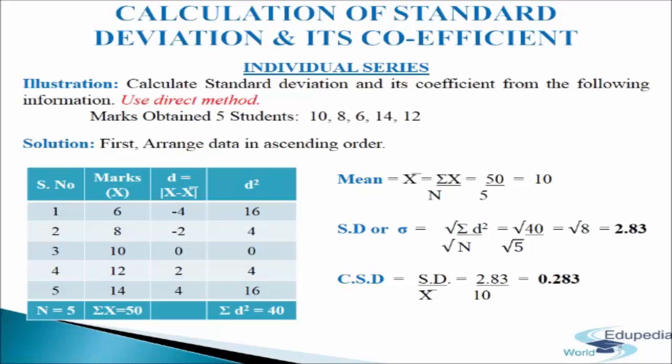Standard deviation = √(σd² / n) = √(40 / 5) = √8 = 2.83. Coefficient of standard deviation = SD / mean = 2.83 / 10 = 0.283. This is how we calculate standard deviation and its coefficient using the direct method.